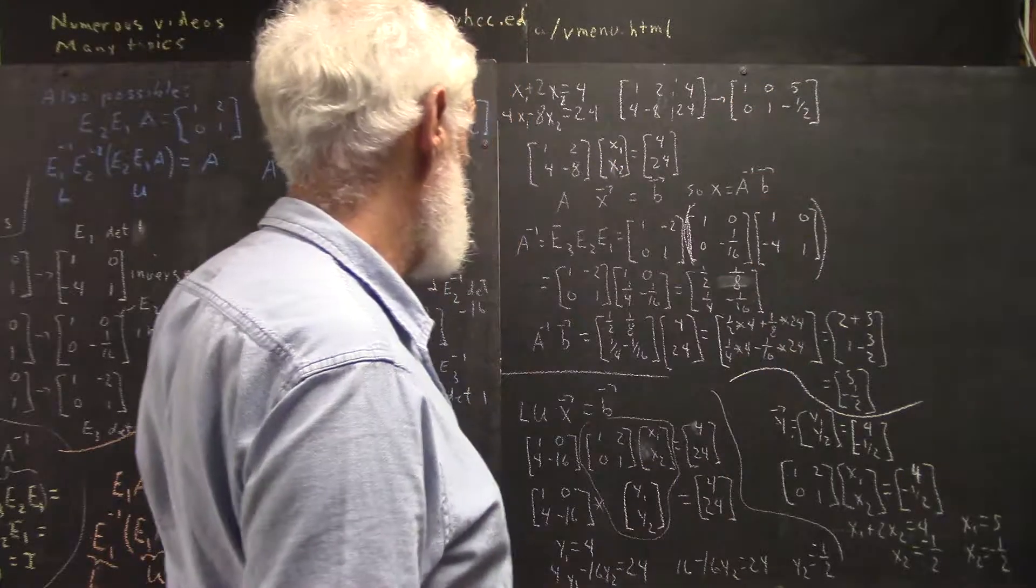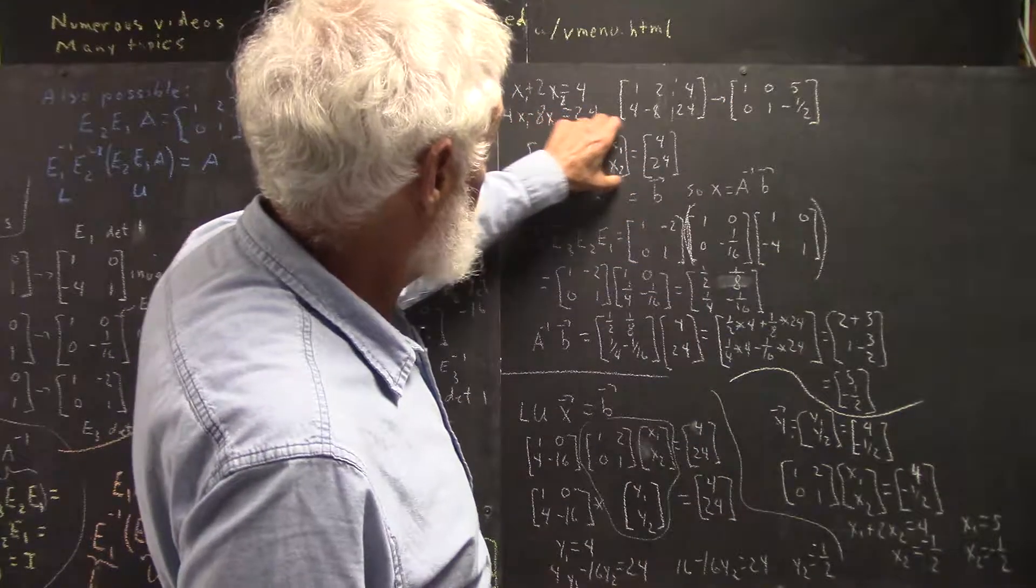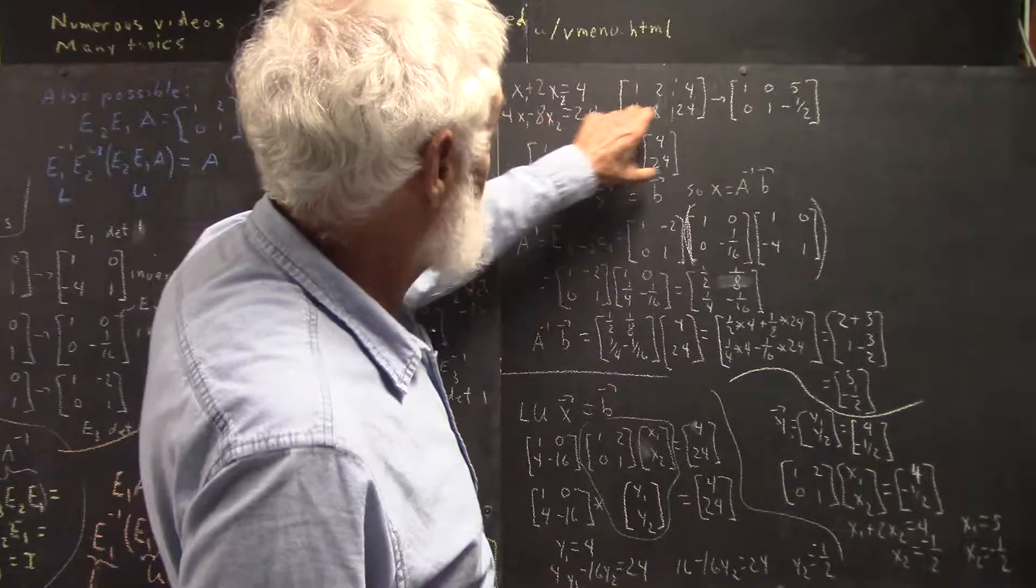We've already solved this system. Here's the augmented matrix. Here's the reduced matrix. Solutions: x1 equals 5, x2 equals negative 1 half.